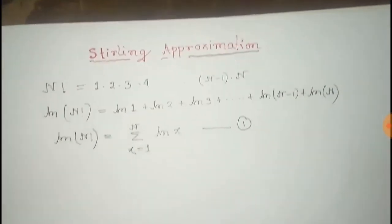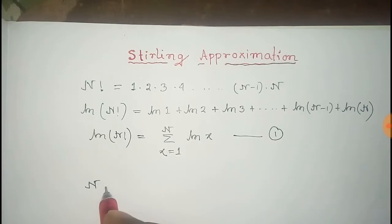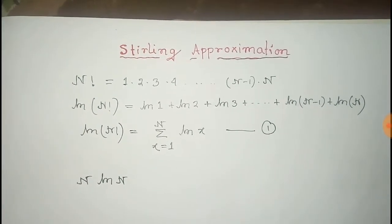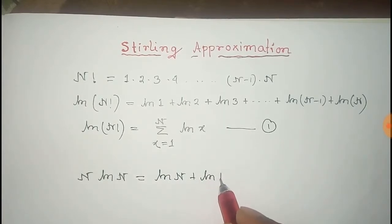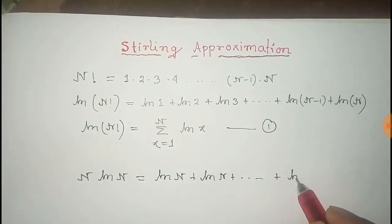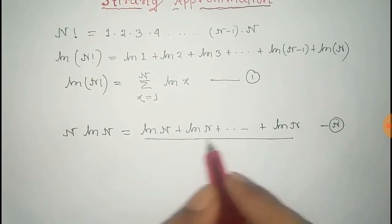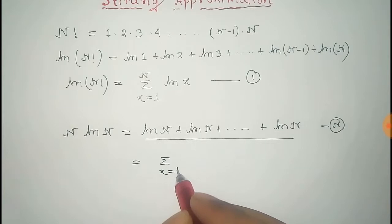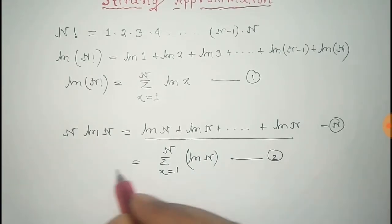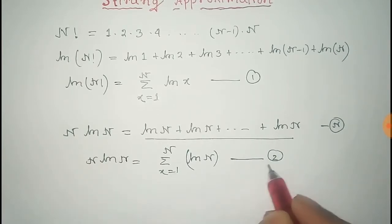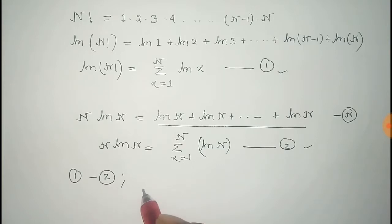Now consider the term n·log(n). This means log(n) summed n times, so we can write it as log(n) + log(n) + ... + log(n), with n total terms. We can also express this as a summation: n·log(n) = Σ (x=1 to n) log(n). We take this as equation number two.